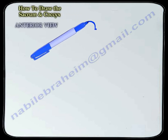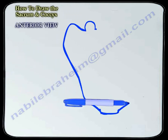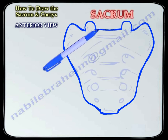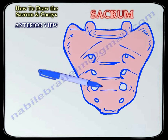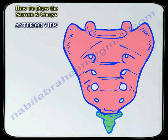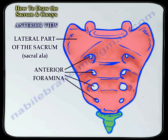Here is the anterior drawing of the sacrum. The important structures are the sacral ala, which is the lateral part of the proximal sacrum, and the anterior foramina.